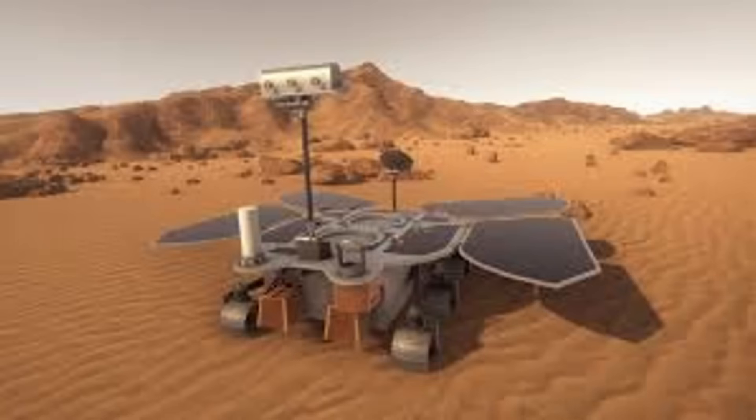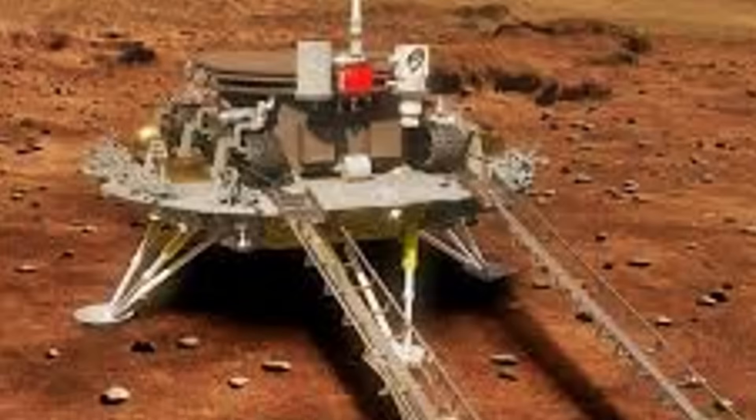The Tianwen-1 Orbiter, which entered Mars orbit in February 2021, used its high-resolution imaging camera equipped with a 38.7 centimeter diameter primary mirror. Although it has lower resolution than the 50-centimeter aperture of the American high-rise camera, the Chinese images are revolutionary.